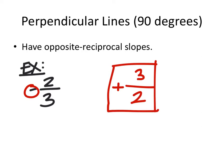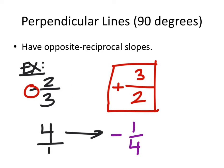Let's try one more. If we had a slope of four — which is four over one — the opposite reciprocal slope would be negative, and then we flip the fraction for the reciprocal, giving us negative one-fourth. This is going to apply a lot as we start rotating things 90 degrees.